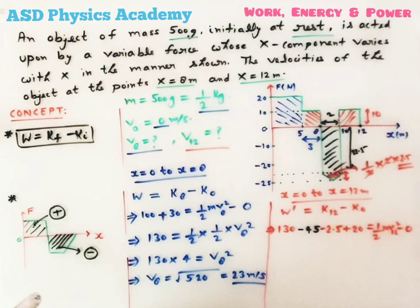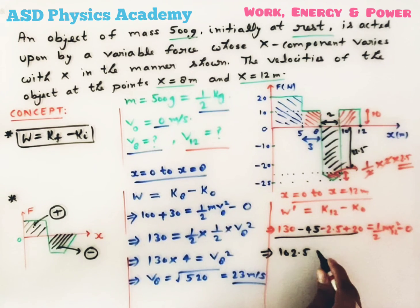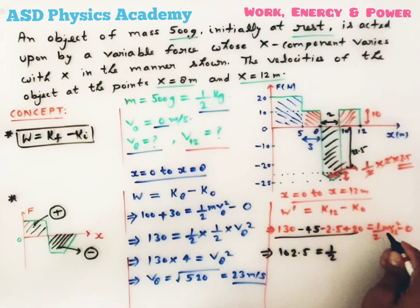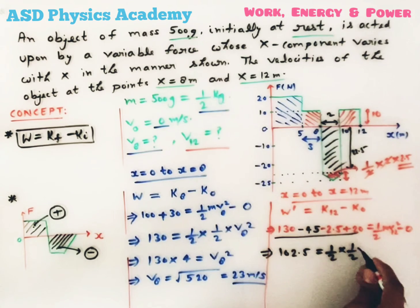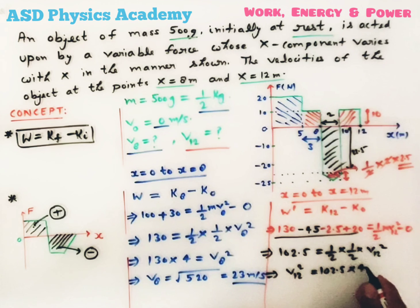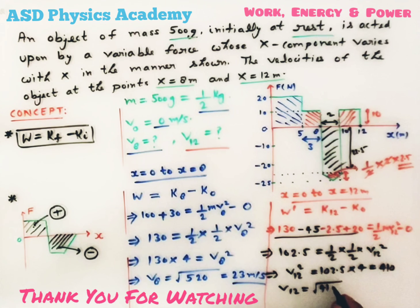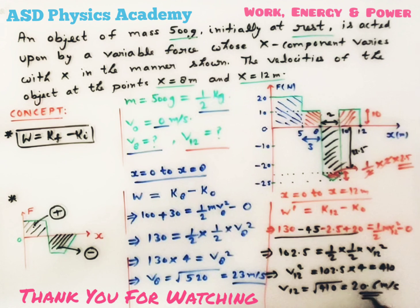Simplifying everything: 130 minus 45 minus 2.5 plus 20 equals 102.5 joules, which equals half times 0.5 kg times v12 squared. Therefore v12 squared equals 102.5 into 4, giving 410. So v12 equals the square root of 410, which is approximately 20.6 meters per second.